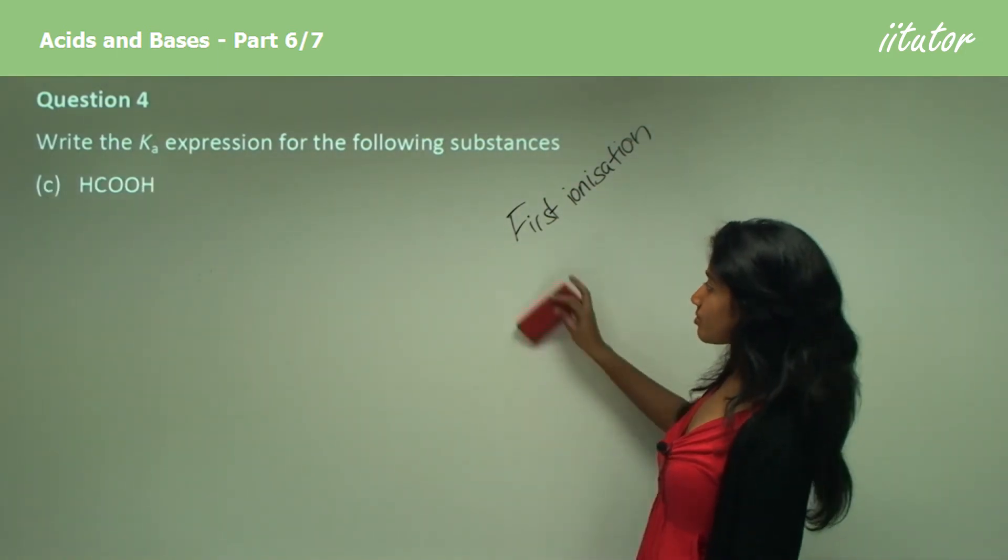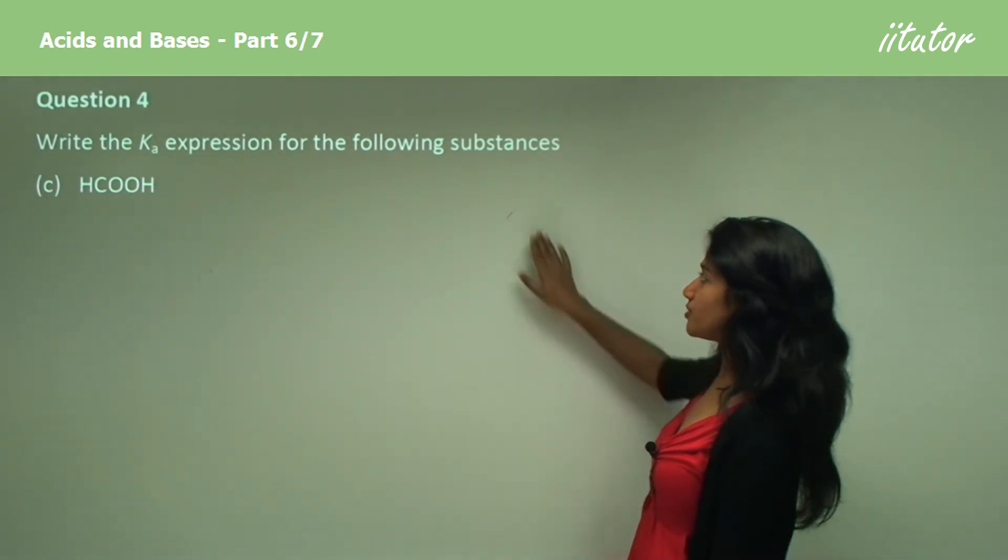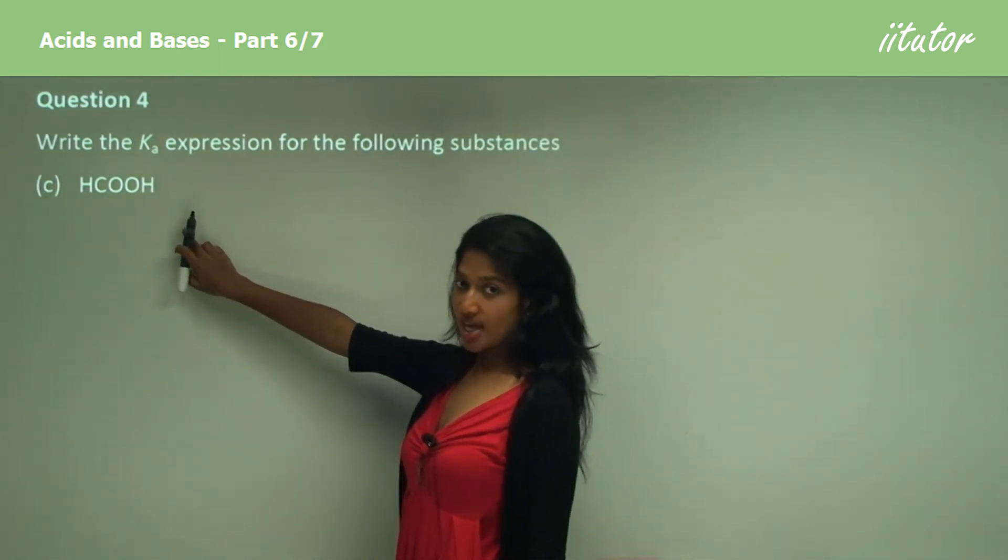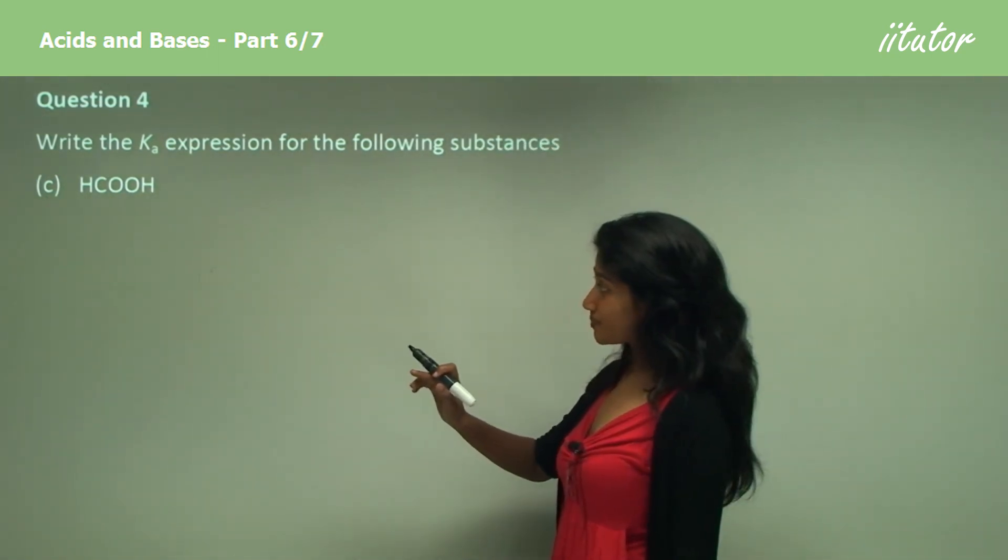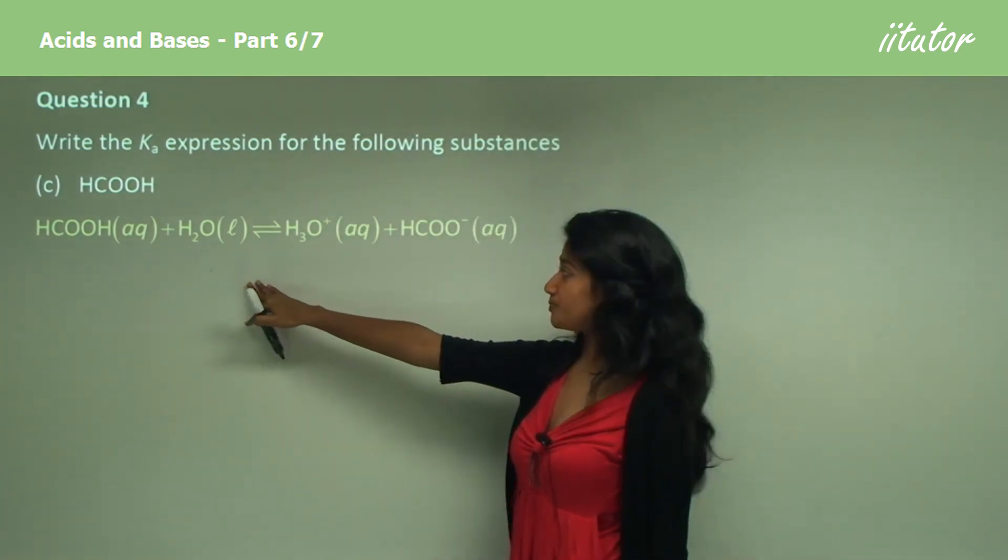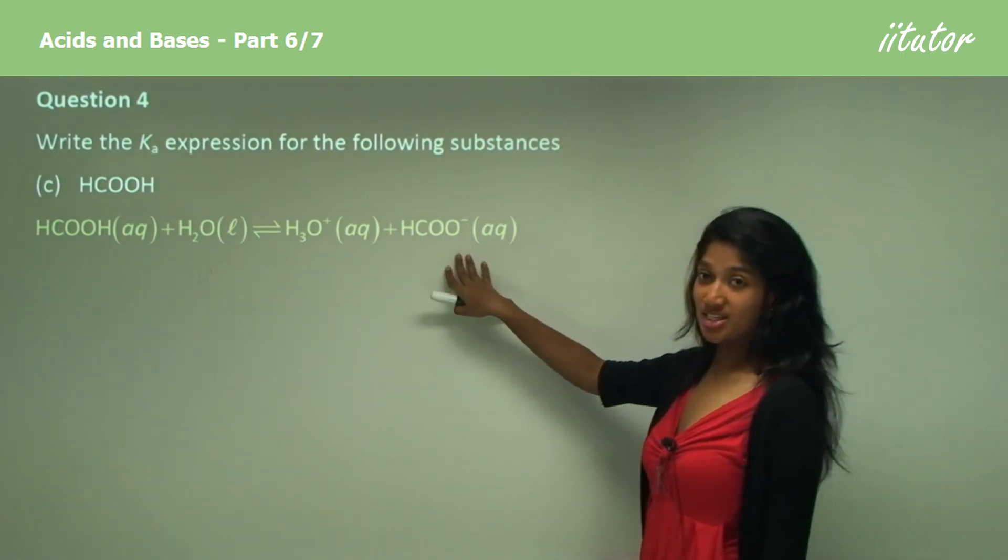Now C. Write the K expression for HCOOH. This is called methanoic acid. And you have methanoic acid reacting with water to form hydronium ion and a methanoate ion.